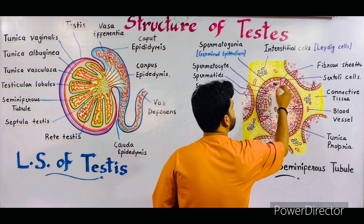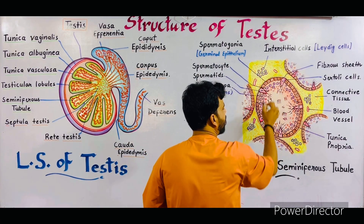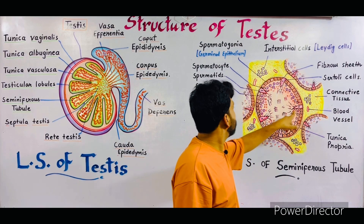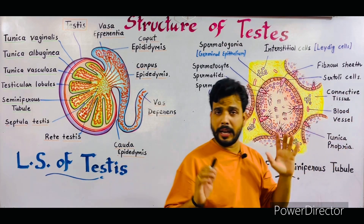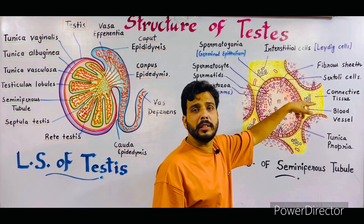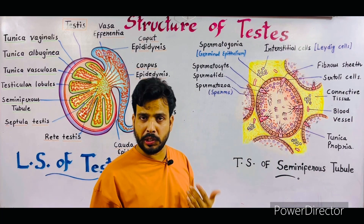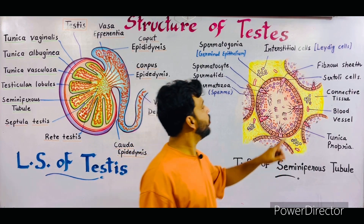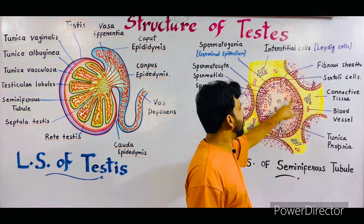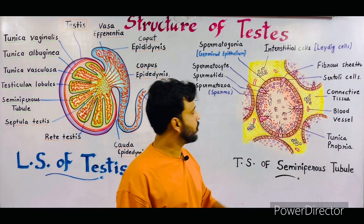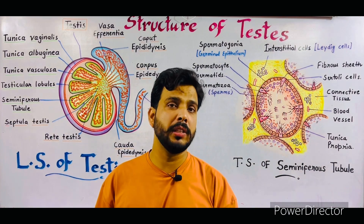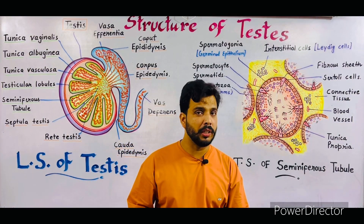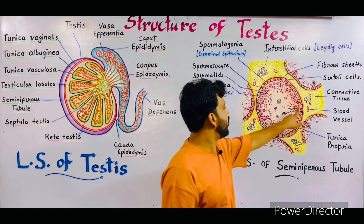One important thing — at the margins of the seminiferous tubules, some large cells are also present. As you can see, these light red colored cells are termed as Sertoli cells. These spermatozoa insert their heads into the Sertoli cell and absorb nutrition. So the Sertoli cells provide nutrition to the developing spermatozoa. This is a very important exam question: what is the function of Sertoli cells? The function of Sertoli cells is to provide nutrition to the developing spermatozoa or the sperms.